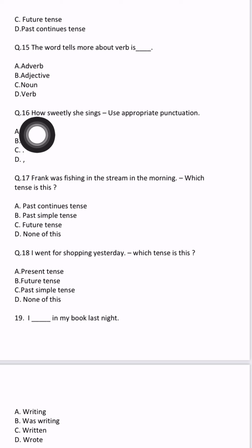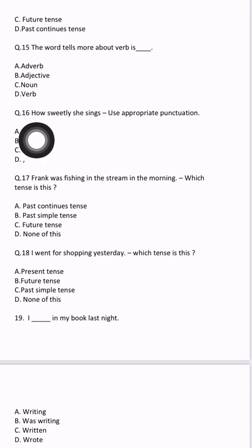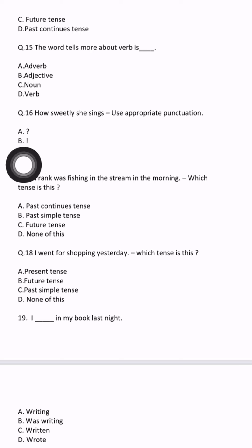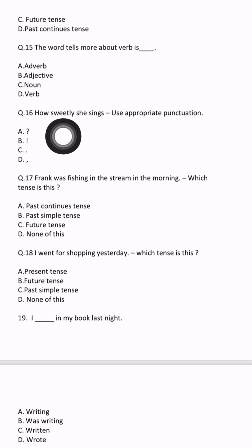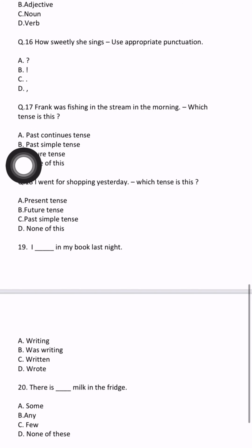Question number 16: 'How sweetly she sings.' Use appropriate punctuation. Full stop is used when a sentence ends; comma for a small break; question mark when asking a question; exclamation mark when surprised or praising someone. Here we are praising someone. Let's read again — 'How sweetly she sings!' Yes, we are praising. So we will use an exclamation mark. Answer will be B.